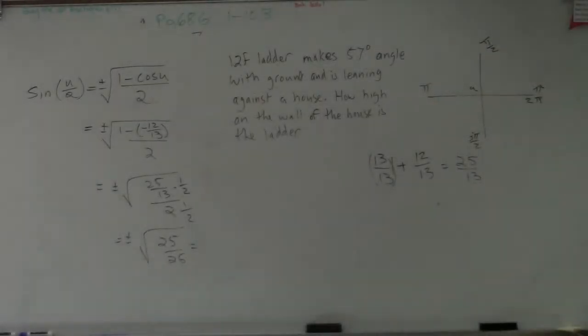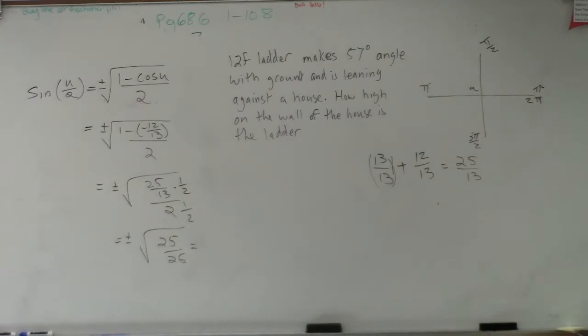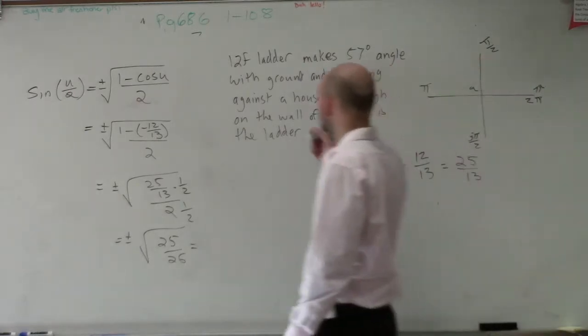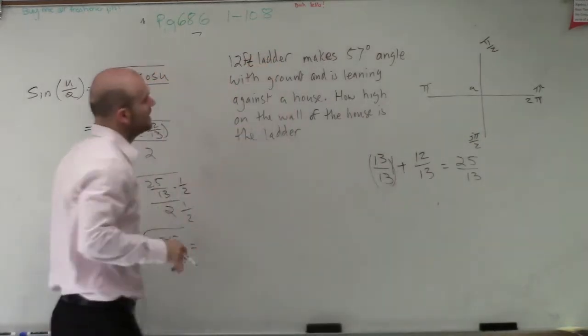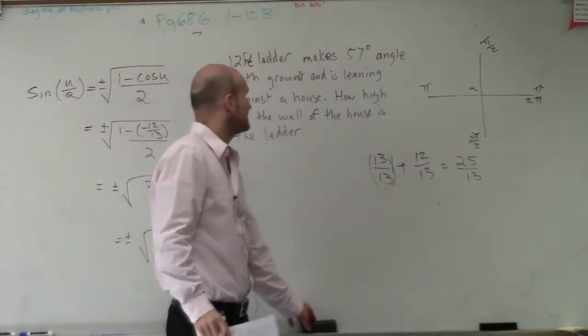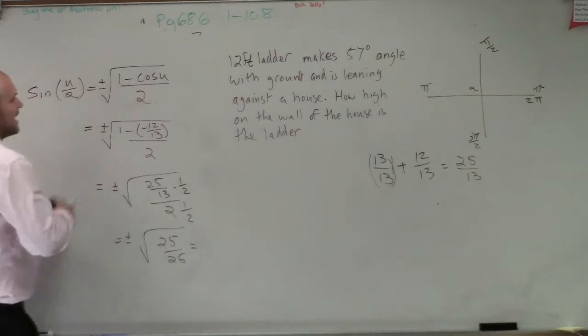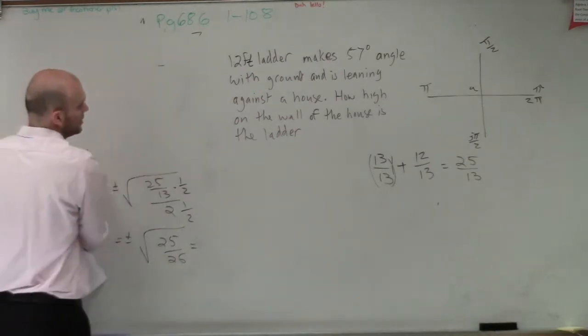So in this problem, a 12-foot ladder makes a 57-degree angle with the ground and is leaning against a house. How high on the wall is the ladder?